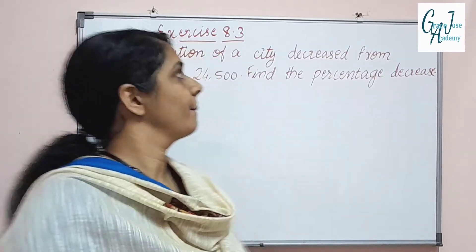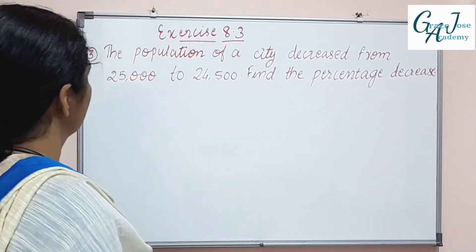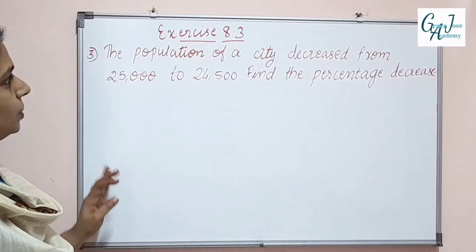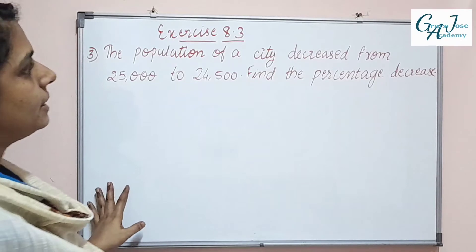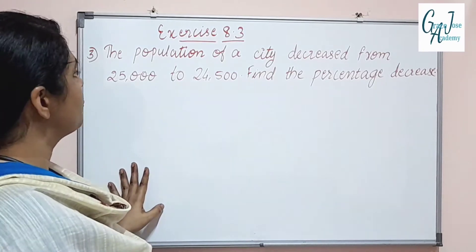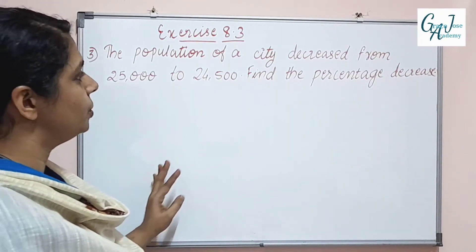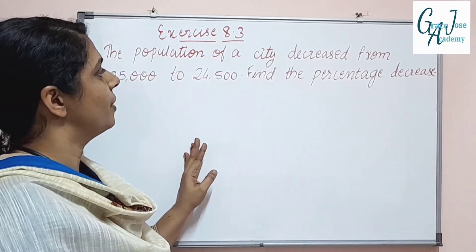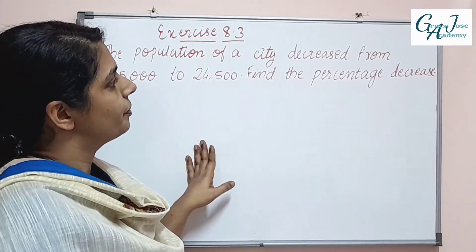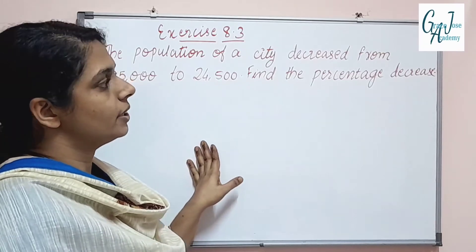Welcome back to Graduate Church's Academy. Now we will do exercise 8.3, third question. The population of a city decreased from 25,000 to 24,500. Find the percentage decrease.